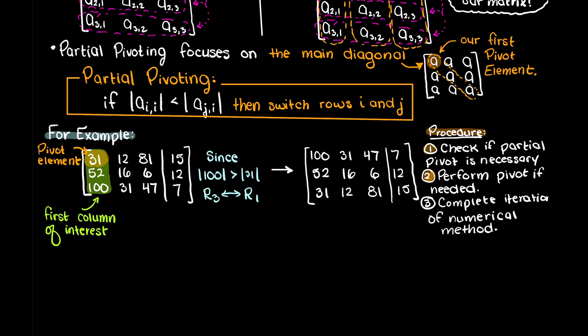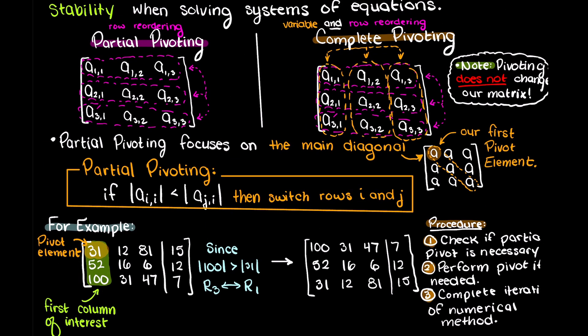We do this since the larger number in our denominator will lead to less truncation errors which will grow like a snowball throughout our problem.